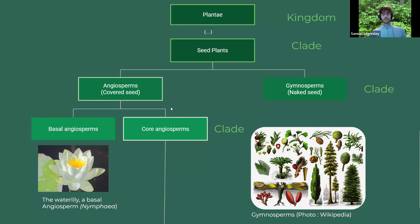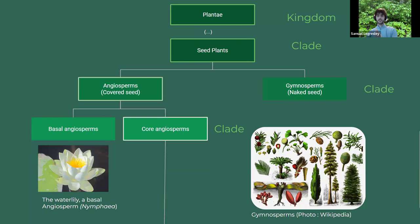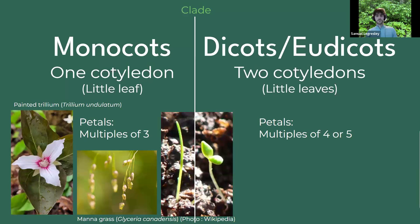The angiosperms are the covered seed; the gymnosperms are the naked seed. At the bottom of all these ranks you have the plants we need to identify. Every single rank goes down like a common ancestor clade — and about in the middle, you have the monocot. The gymnosperms — the naked seeds — are basically our conifers, big trees with cones. Within the core angiosperms, which are the flowering plants that are not water lilies, there are very specific differences between the two groups we're going to look at today: monocots and dicots.